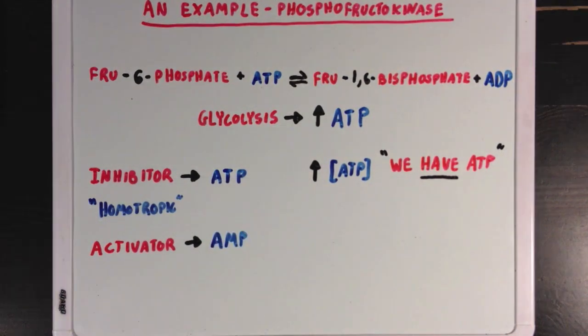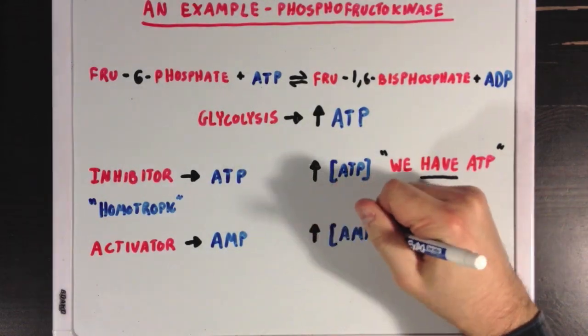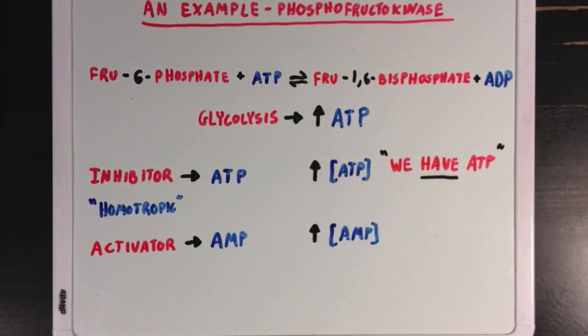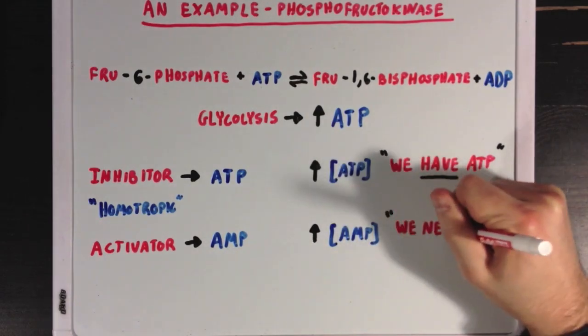Now, AMP, which is used up ATP, is an activator for phosphofructokinase. And this also makes sense, because if AMP levels are high, then ATP levels are probably low. And it's like the cell saying, we need ATP.